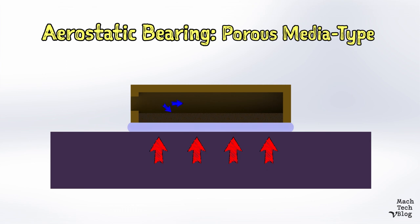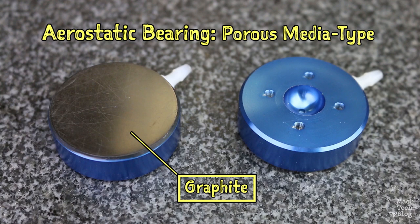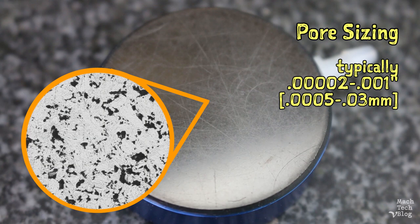Porous media designs accomplish the same task by forcing the air through a labyrinth of tiny passageways or pores to create a uniform blanket of air at the bearing face. Graphite is the medium of choice because it has the added benefits of being easy to machine and having good natural lubricity, so it won't damage the guideways in the event of a loss of pressure. This type of bearing is still susceptible to pneumatic hammer if the pore size isn't just right. But there's an easy way to correct for this, which I'll show you later.